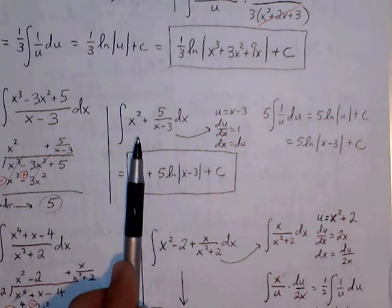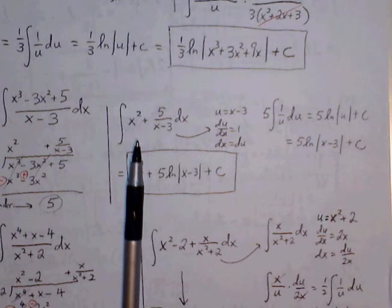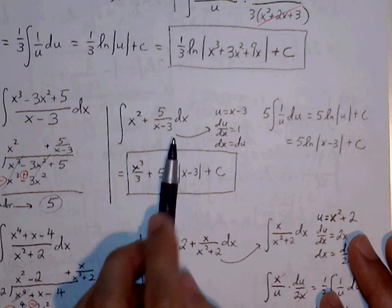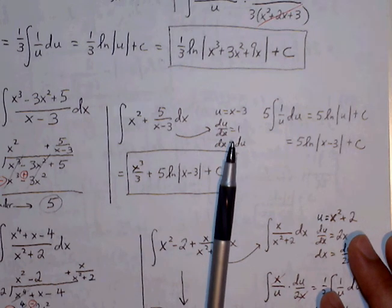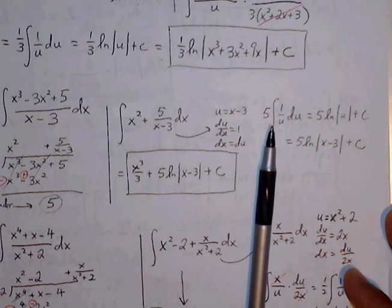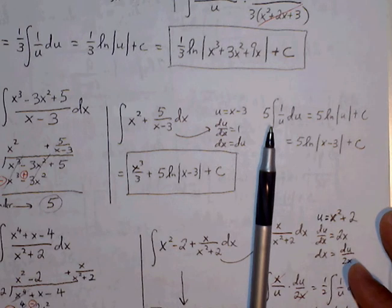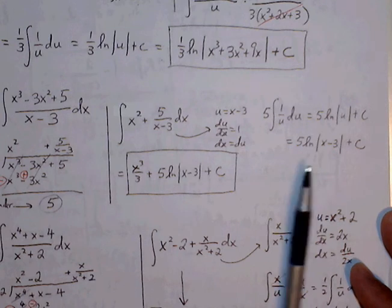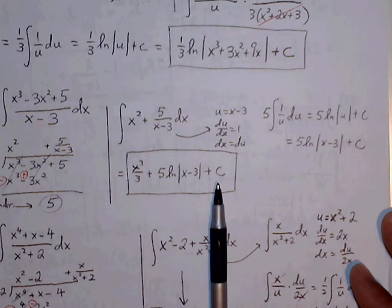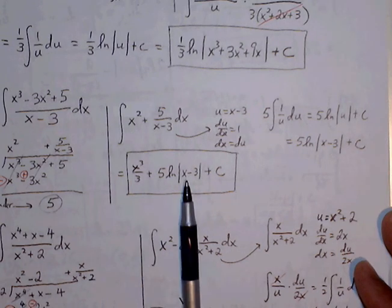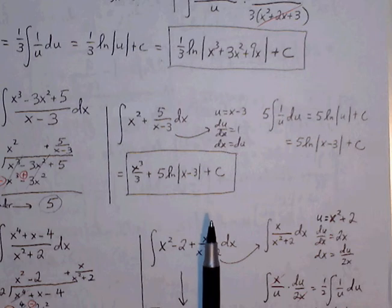Now we can rewrite our fraction as a quotient: x squared plus 5 over x minus 3. The integral of x squared uses power rule. For the integral of 5 over x minus 3, we use u substitution with u equal to x minus 3. The derivative of u with respect to x is 1, so dx equals du. The integral of 5 times 1 over u is simply 5 natural log of u plus c. x squared via power rule becomes x cubed over 3. Combining terms gives our general solution.